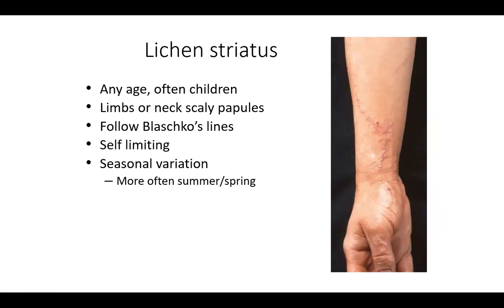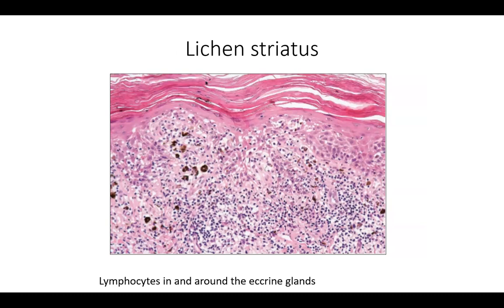Lichen striatus presents as a linear plaque, often in children, affecting limbs and neck as scaly or linear papules and plaques. It follows Blaschko's lines of development, can be self-limiting, doesn't always require treatment, and can show seasonal variation, more often in summer or spring. Histologically it looks similar to lichen planus, but the key finding is inflammation around the eccrine glands.